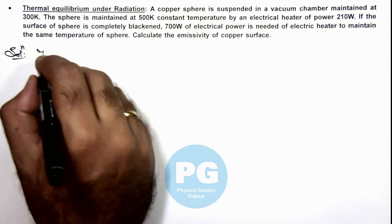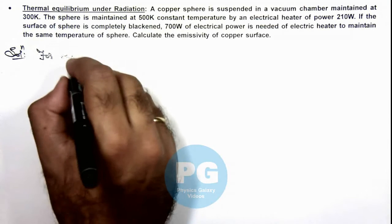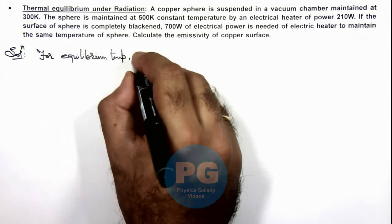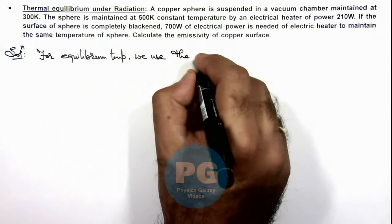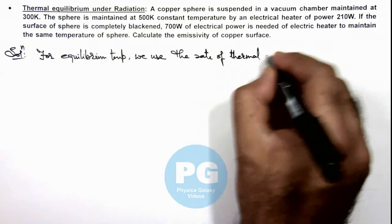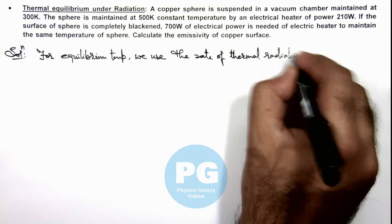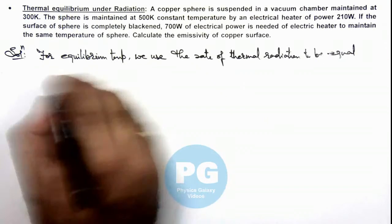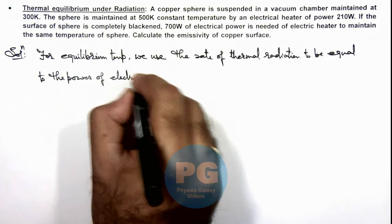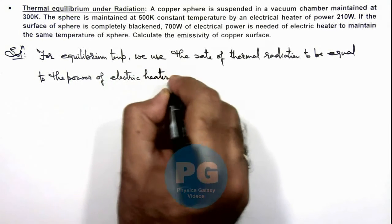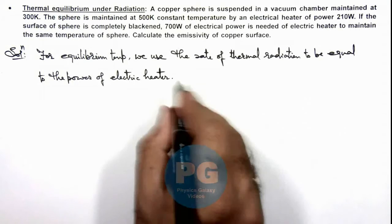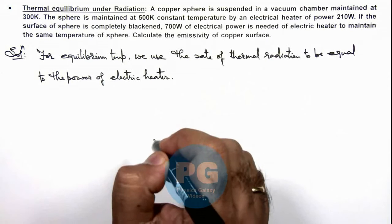So here we can write for equilibrium temperature, we use the rate of thermal radiation to be equal to the power of electric heater. Only in that condition, the amount of energy which is generated by electric heater will be radiated and no temperature increment will be there for the sphere.